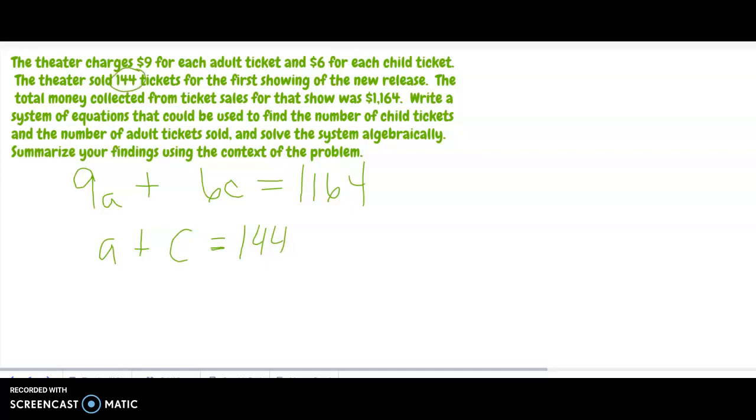So what you can do here, I want to show you how to do this or just continue doing what we've always done. We'll just do it, I don't want to confuse y'all. Let's move this to be a equals 144 minus c and now we can plug that back in to here. So 9 times 144 minus c plus 6c equals 1164.